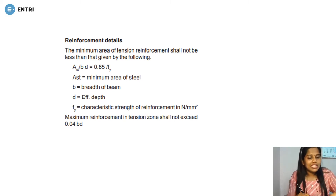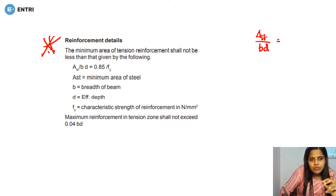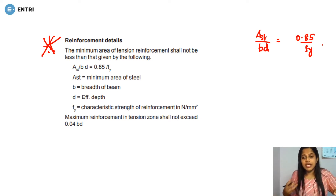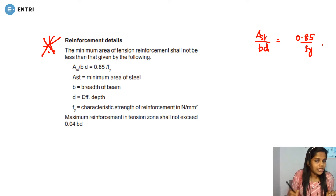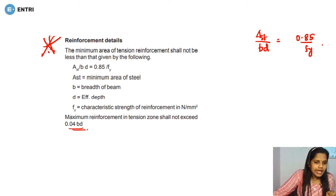This is reinforcement — minimum reinforcement and maximum reinforcement. We will learn about the minimum area of tension reinforcement. The formula is: Asd by BD is equal to 0.85 by FY, where Asd is the minimum area of steel, B is the breadth, and D is the effective depth. The maximum area of tension reinforcement is 0.04 BD.